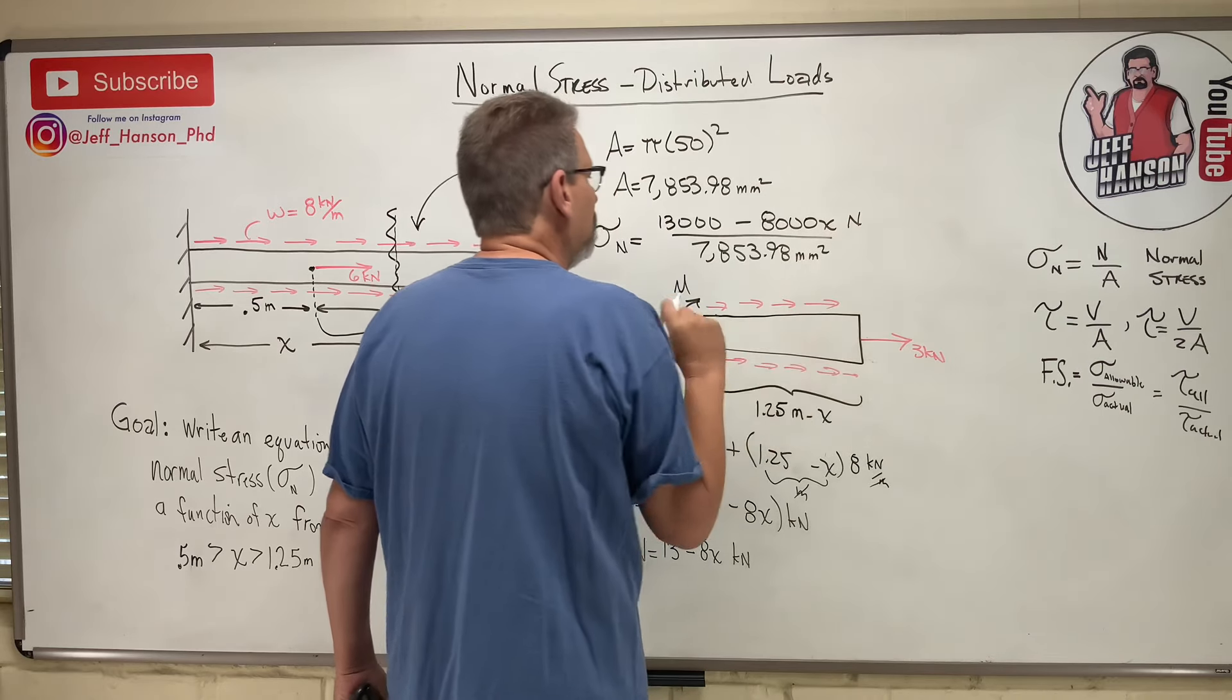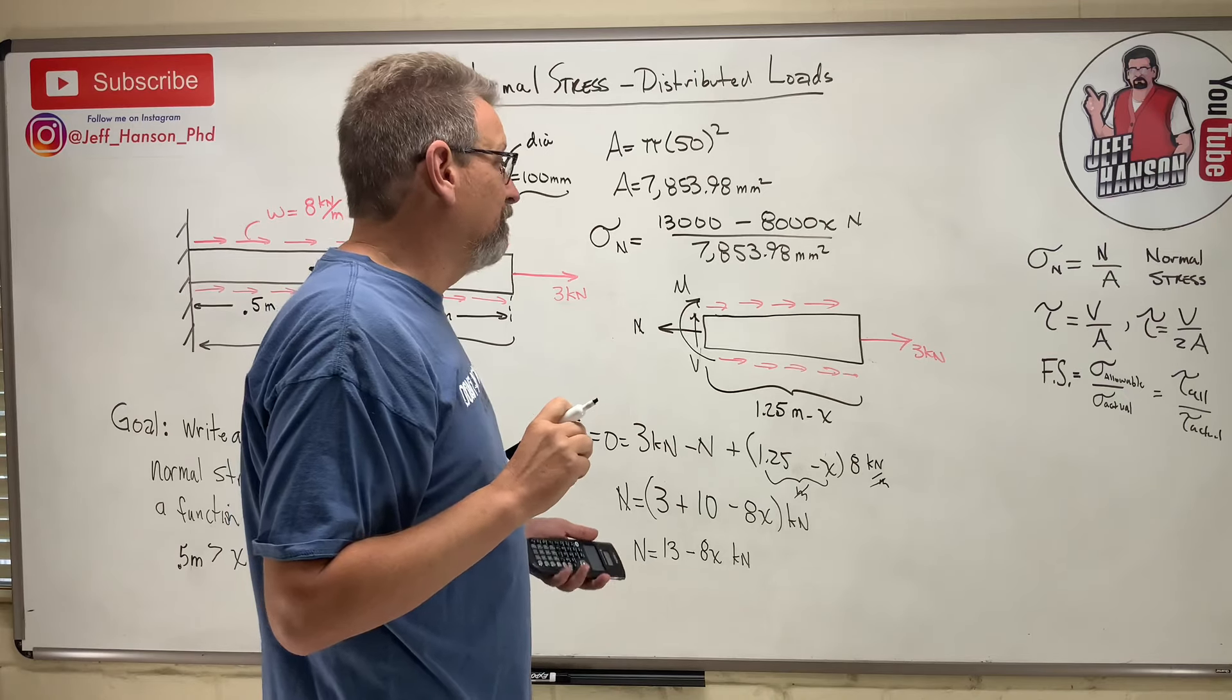So 13,000 minus 8,000 X divided by the area 7,853.98 millimeters squared. This top is in newtons. Well, that's going to give me megapascals, isn't it?